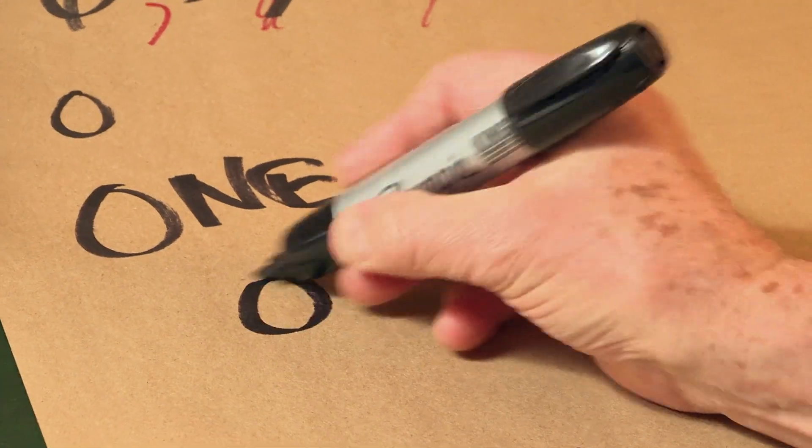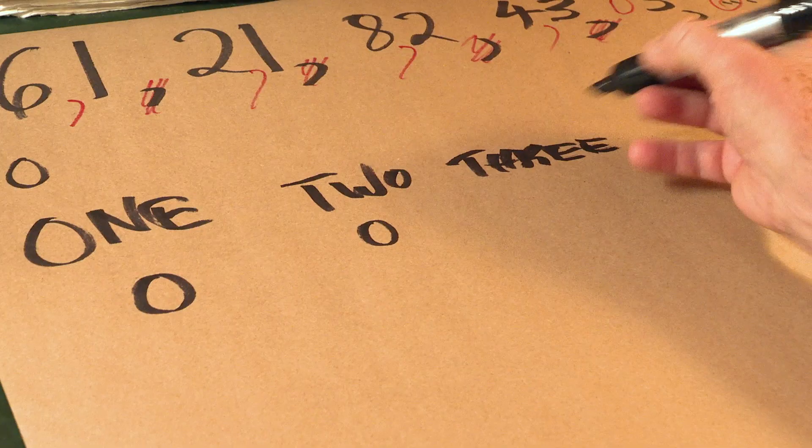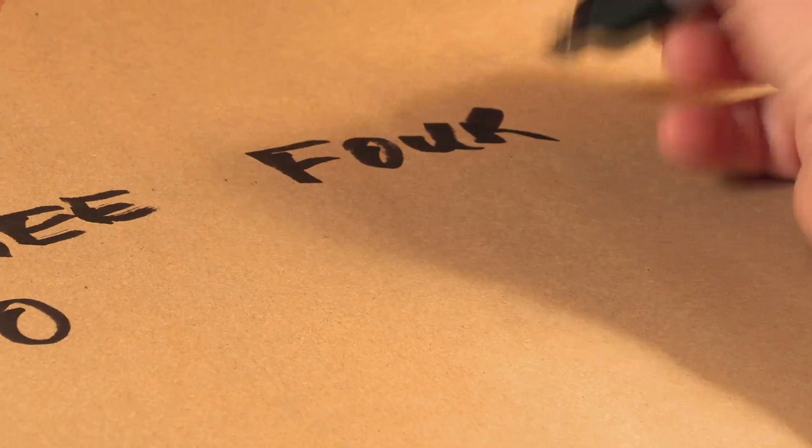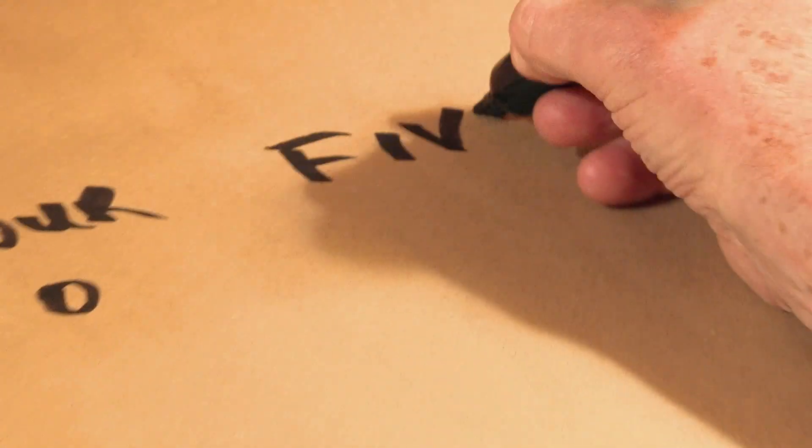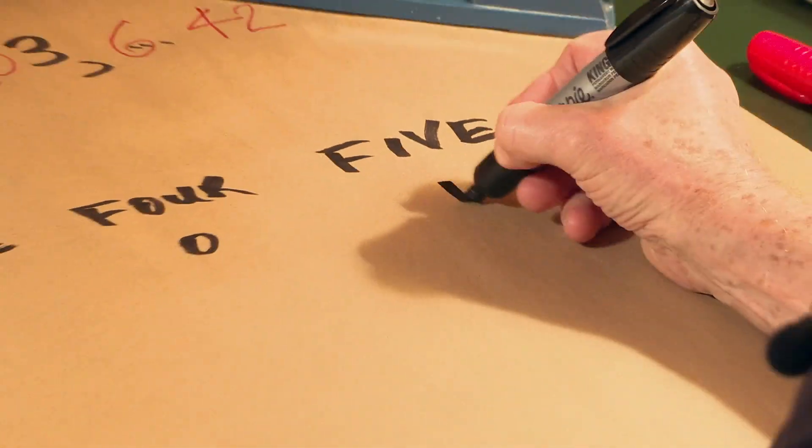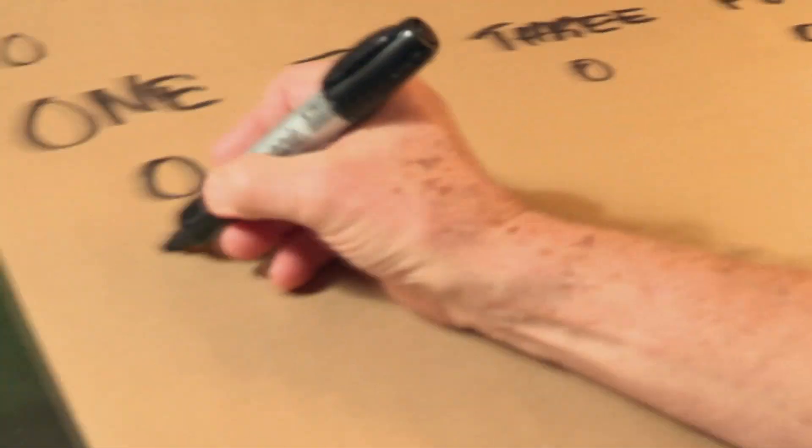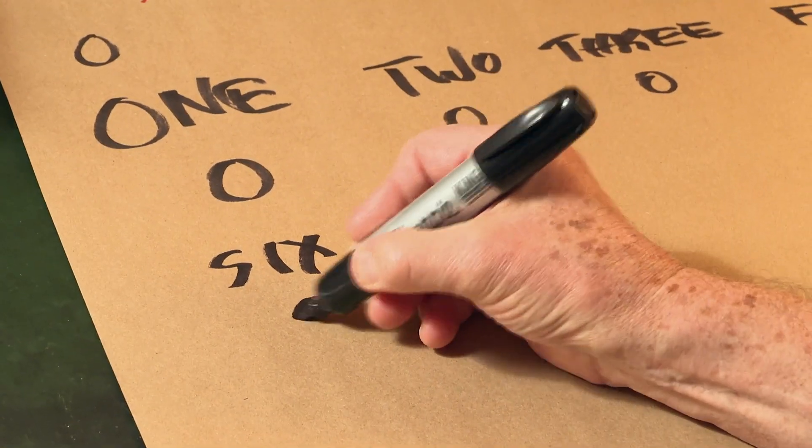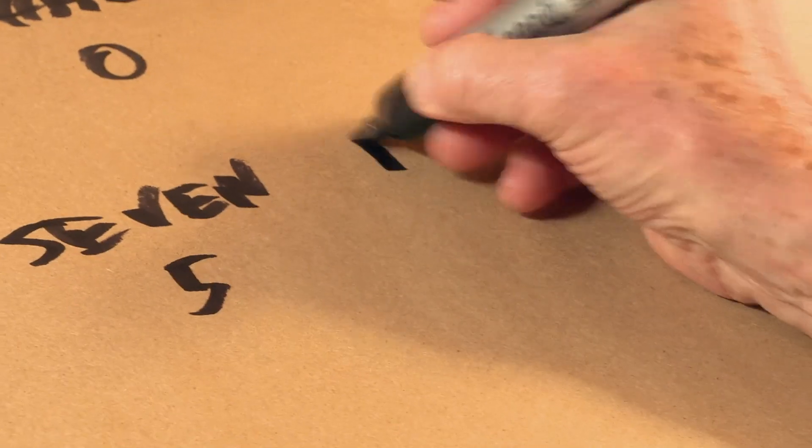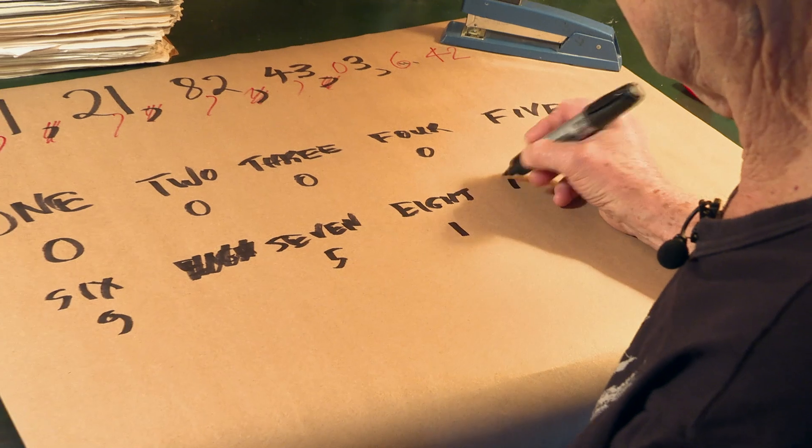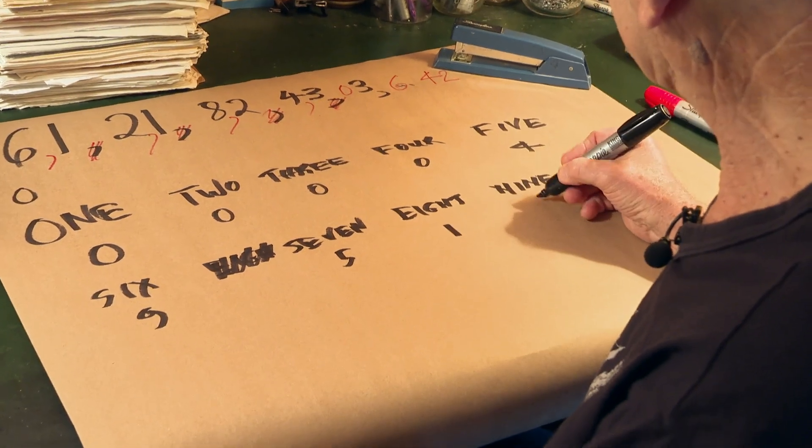1, we get 0. 2, we get 0. 3, we get 0. 4, we get 0. This doesn't look too promising. Is it ever going to get more than 0? 5, we get 4. 6, we get 9. 7, we get 5. 8, we get 1. 9, we get 1.